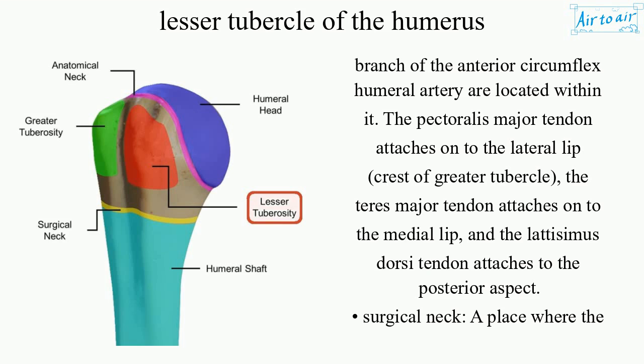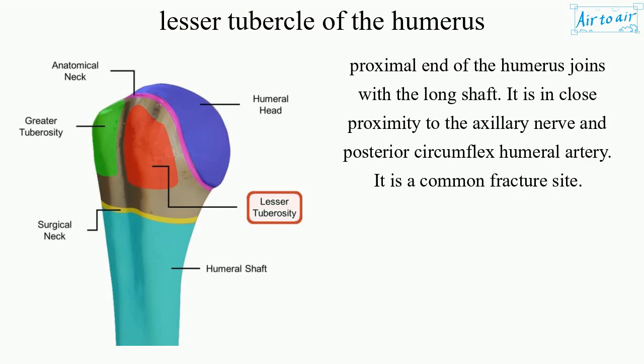Surgical neck. A place where the proximal end of the humerus joins with the long shaft. It is in close proximity to the axillary nerve and posterior circumflex humeral artery. It is a common fracture site.